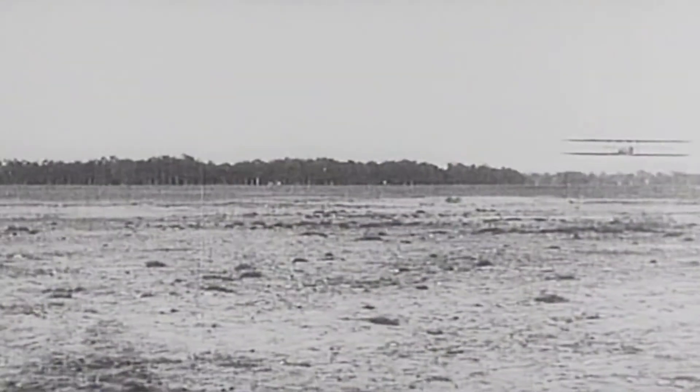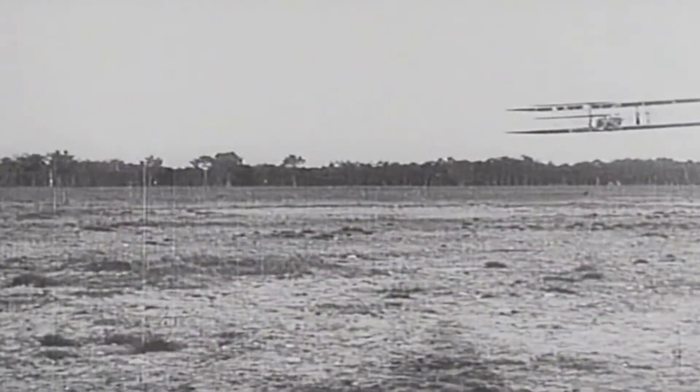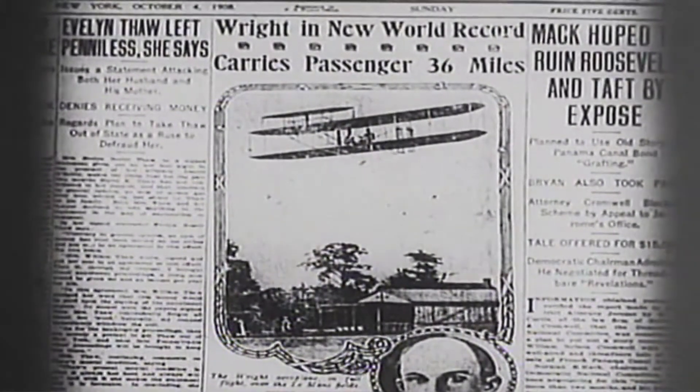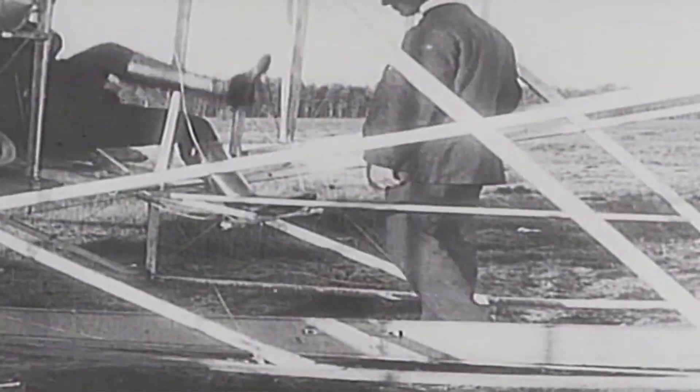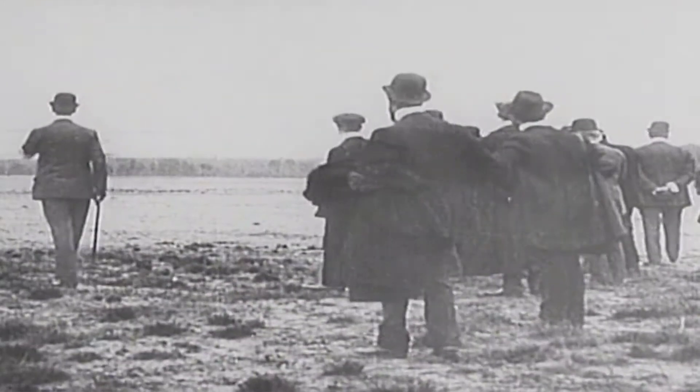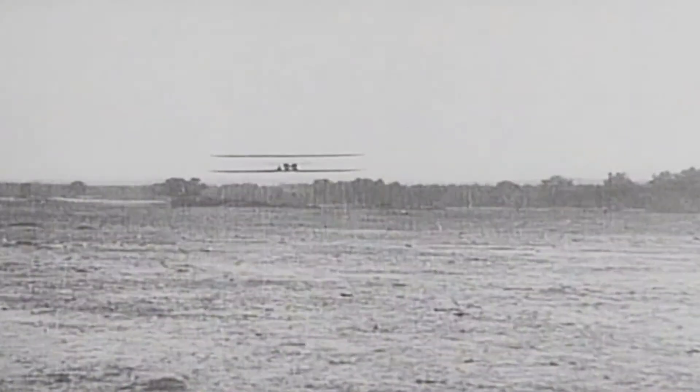This is the Wright Brothers Flyer. You may have seen it before. It was the very first airplane to make a successful flight in human history. It was very hard to control, was made of wood and fabric, and had a strange shape compared to what we see nowadays. The Wright Brothers did a lot of scientific research to build it and make it fly.